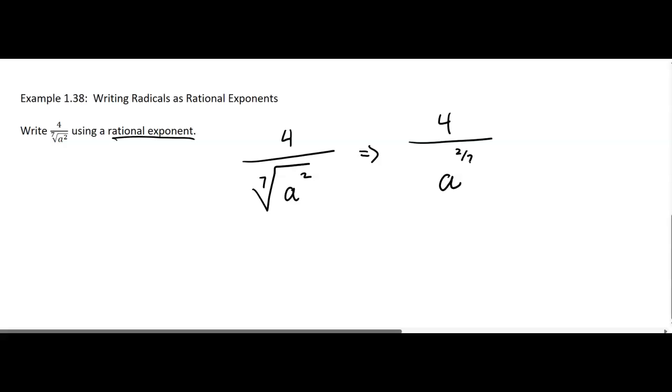Now, I guess you could leave it like that. It doesn't look very nice. I'm going to change it to 4 a to the negative 2/7ths because it was in the denominator. Right? So I could bring it up and give it a negative exponent. And I'm going to leave it like that.